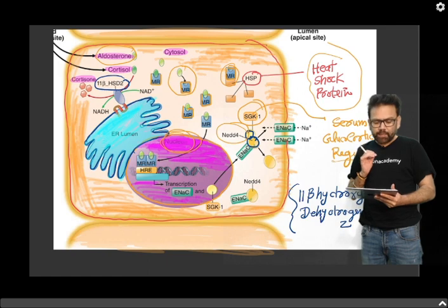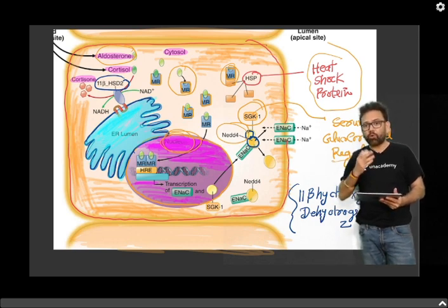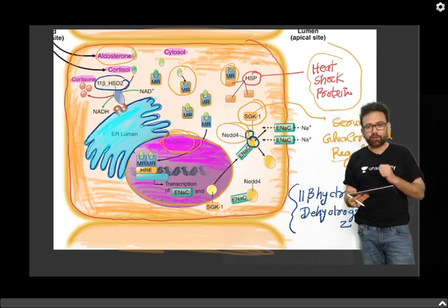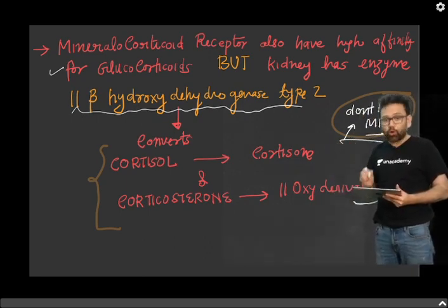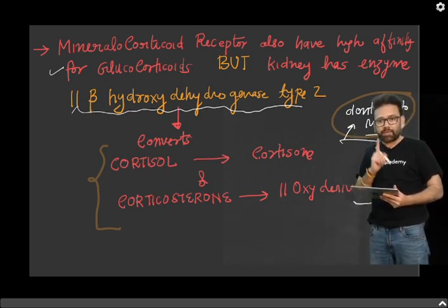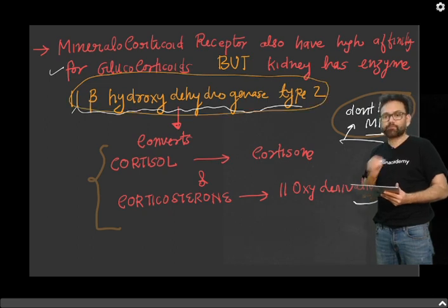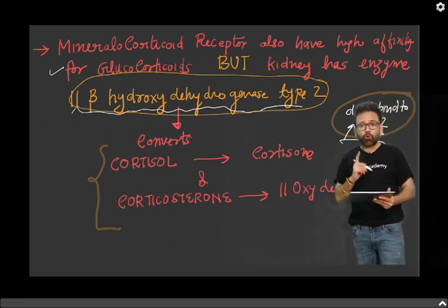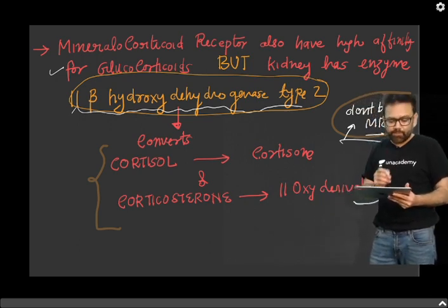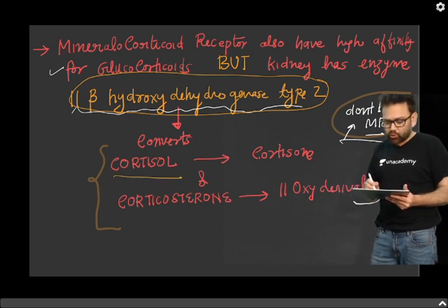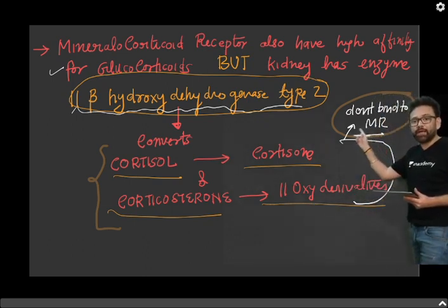One more thing to highlight: mineralocorticoid receptors also have affinity for glucocorticoids, and glucocorticoids are more in number. So why don't glucocorticoids bind to the mineralocorticoid receptor and activate them? The answer is that the kidney has an enzyme — 11-β-hydroxysteroid dehydrogenase type 2 (11-HSD2). Although glucocorticoids have high affinity and are more in number, the kidney has 11-β-HSD2, which converts cortisol into cortisone and corticosterone into its 11-oxy-derivative, and these don't bind to the mineralocorticoid receptor.